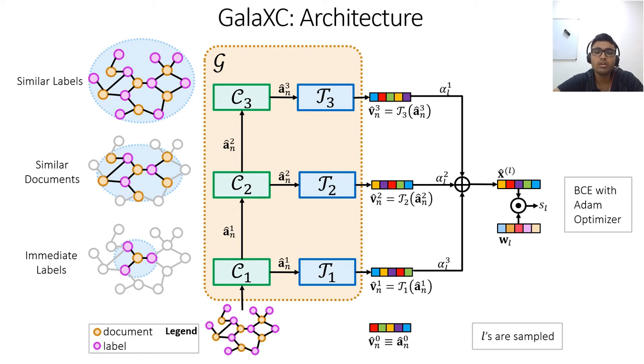As you can see, for a given node, A1 incorporates local information based on immediate neighbours and A2 and A3 include more and more global information. A1, A2 and A3 each of these are then passed through transformation blocks T1, T2 and T3 to get V1, V2 and V3.